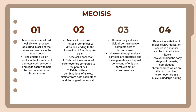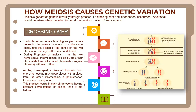Before the initiation of meiosis, DNA replication occurs in a manner similar to that before mitosis. However, during the early stage of meiosis, homologous chromosomes — which are the two matching chromosomes — undergo pairing.